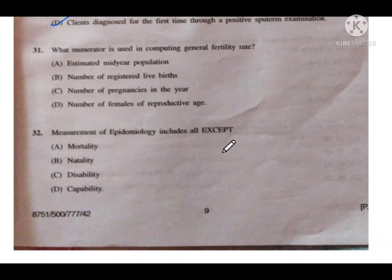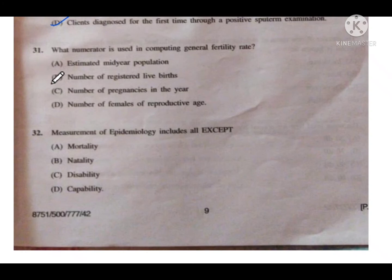Question number 31: What numerator is used in computing the general fertility rate? Option A is estimated mid-year population, B is number of registered live births, C is number of pregnancies in the year, and D is number of females of reproductive age. The general fertility rate formula is: number of registered live births divided by women aged 15 to 49 years, multiplied by 1000 per year. So the numerator is option B — number of registered live births.